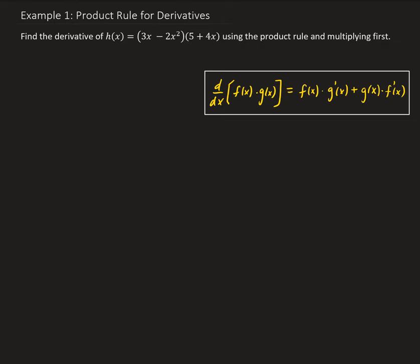The derivative of f times g is going to be equal to f times the derivative of g, plus g of x times f prime of x. In other words, we take the first function, multiply it by the derivative of the second, and add that to the second function multiplied by the derivative of the first function.